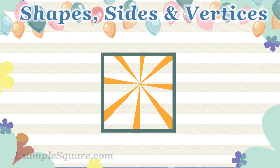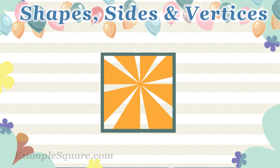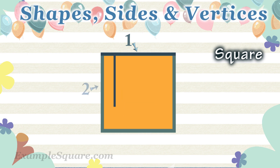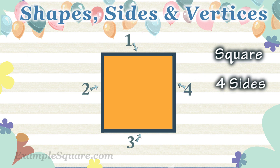What shape is that? Square. How many sides does a square have? A square has four sides.